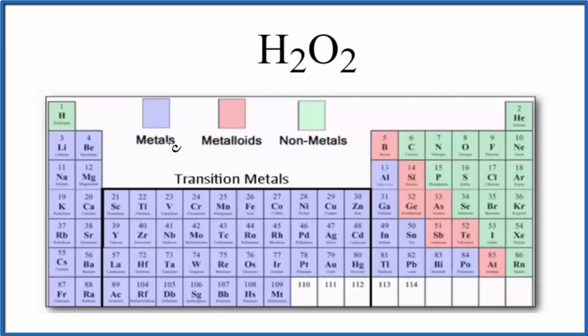We have our periodic table here broken into metals, metalloids, and nonmetals. So we find hydrogen. These are the nonmetals, but hydrogen, it's over here by itself. Still, hydrogen is a nonmetal.